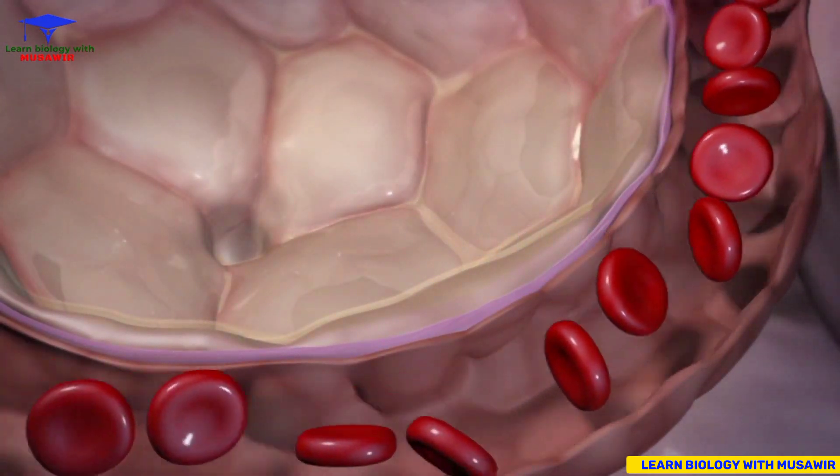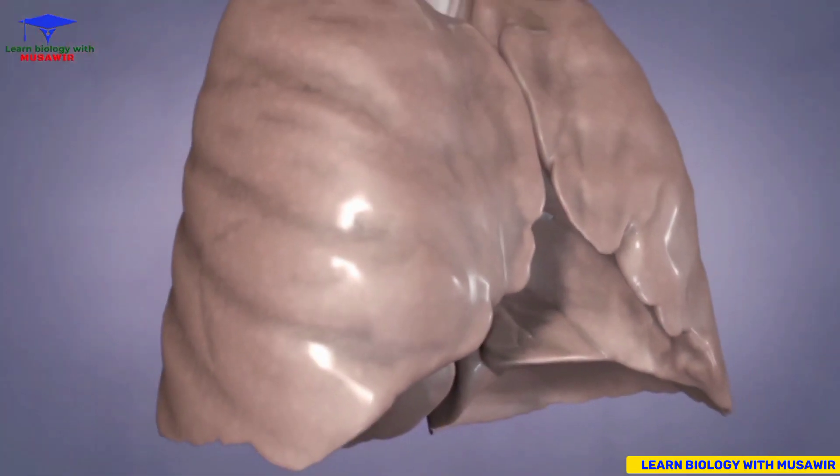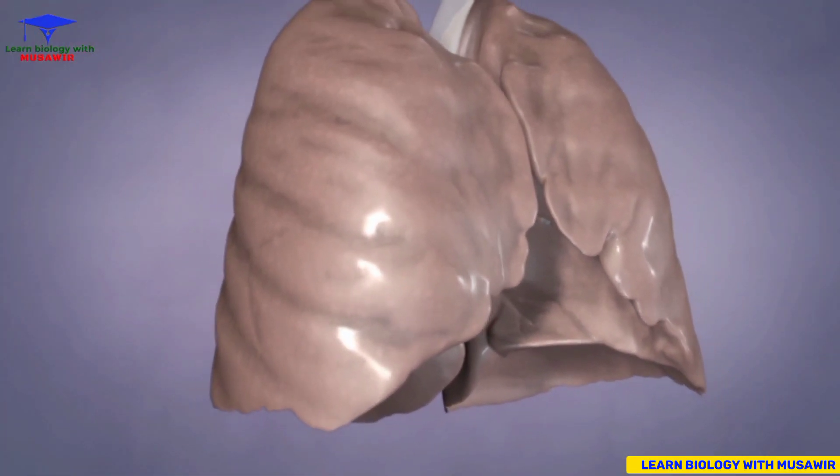The rejuvenated blood travels from the lungs to the heart to be distributed throughout the body.